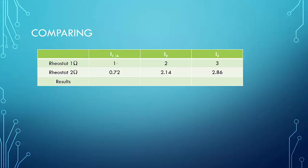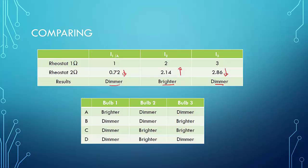Let's sum it up. When the rheostat is 1 ohm: I1 is 1 A, I2 is 2 A, I3 is 3 A. When the rheostat is 2 ohm: I1 is 0.72 A, I2 is 2.14 A, I3 is 2.86 A. The result is that I1 is reduced, I2 is increased, and I3 is reduced. So the conclusion is that light bulb 1 would be dimmer, bulb 2 would be brighter, and bulb 3 would be dimmer — which matches choice D.